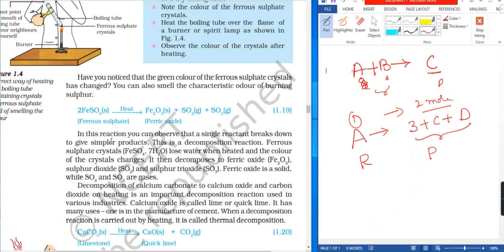In this reaction, you observe that a single reactant breaks down to give simpler products. This is a decomposition reaction. Ferrous sulphate crystals (FeSO4·7H2O) lose water when heated and the color of the crystals changes.